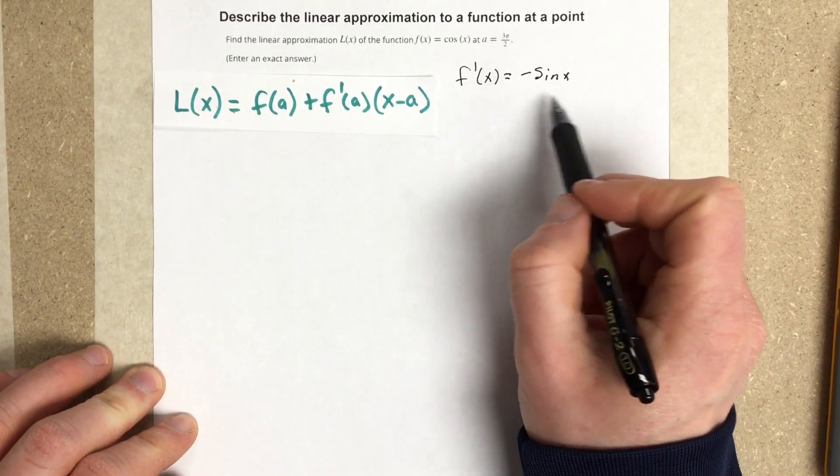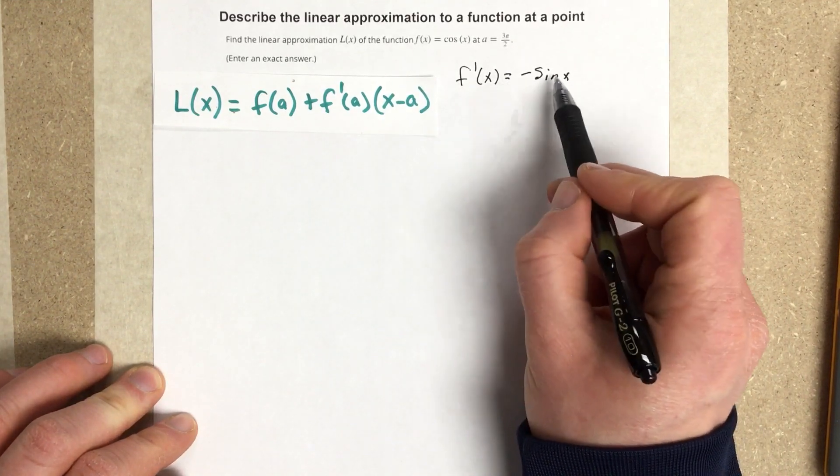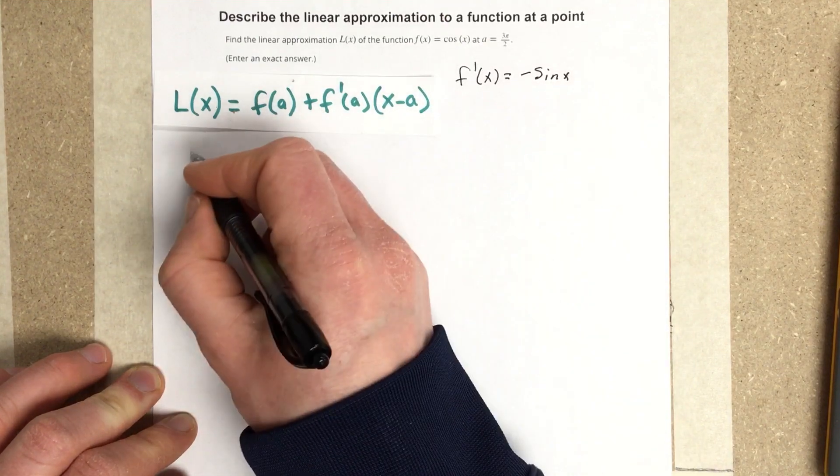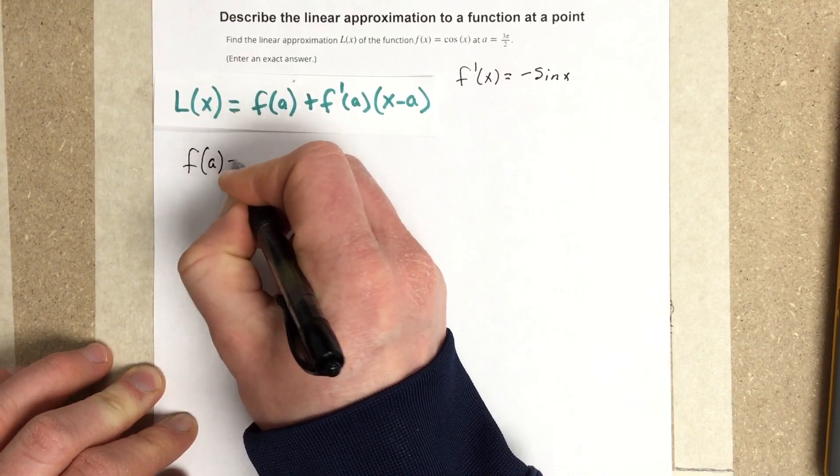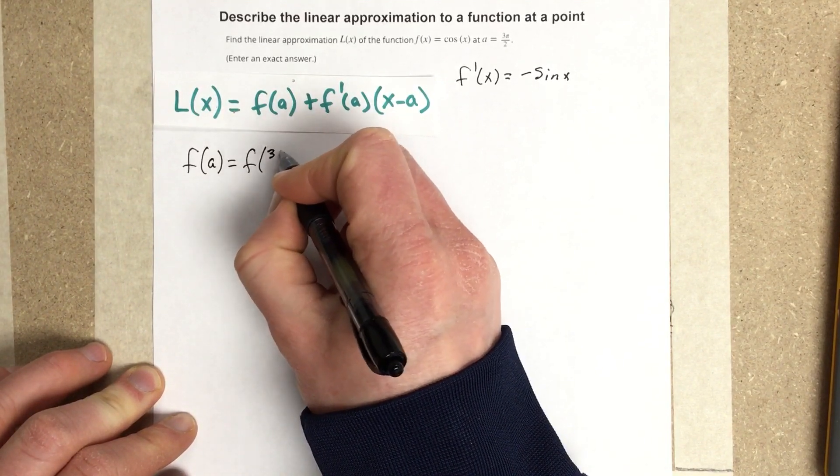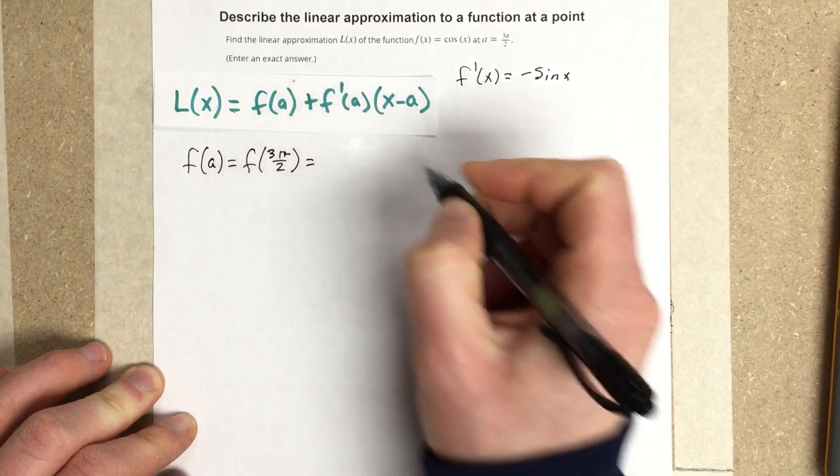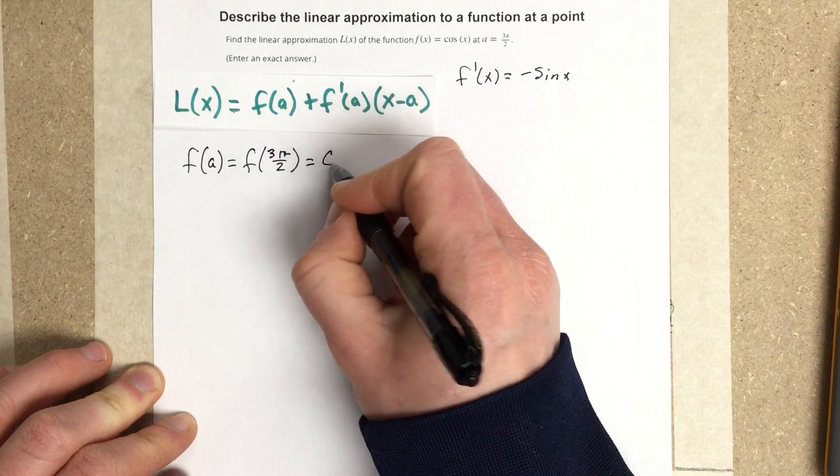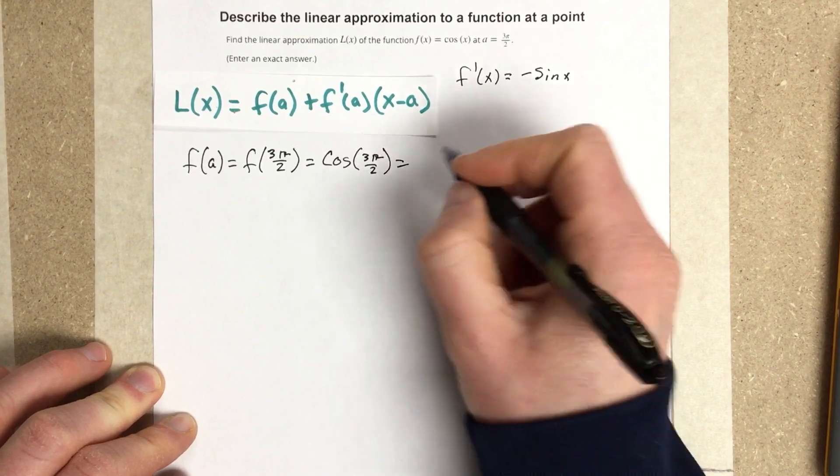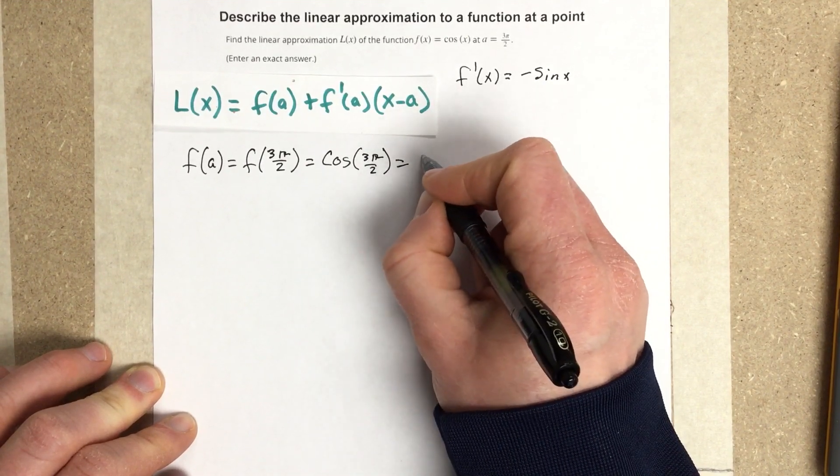And when I go ahead and take that derivative and start inputting a into those values, so I have f(a) is f(3π/2), which is equal to cos(3π/2). And I know cos(3π/2) would be 0.